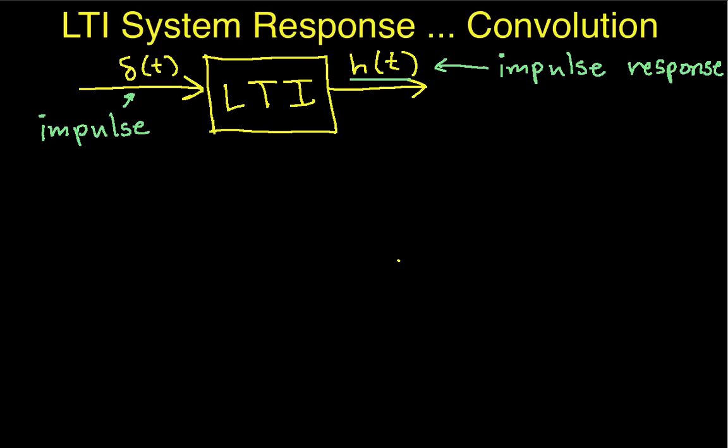Now, eventually we want to be able to get the response of the system to an arbitrary input. The first step in doing that is to recall that because the system is time invariant, if I take a delta function of t minus a, where a is some number. In the past we've been using tau here in place of a, but now we're going to use a, because in a minute we're going to use tau for something else. And by the time I'm done, I want everybody to be as confused as possible. So anyway, if I put a delta function shifted by amount a in, I get the impulse response shifted by that same amount a at the output. That's because the system is time invariant.